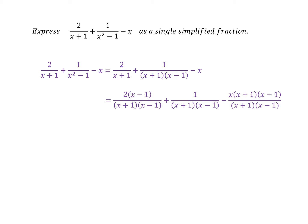I multiply the first term top and bottom by x minus 1. The middle term is the same as it was before, and then the third term I'm multiplying by x plus 1 times x minus 1, both the numerator and the denominator.